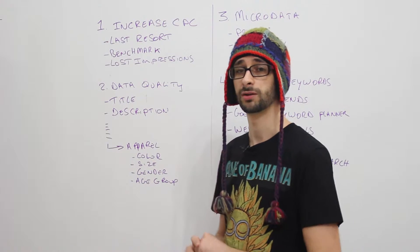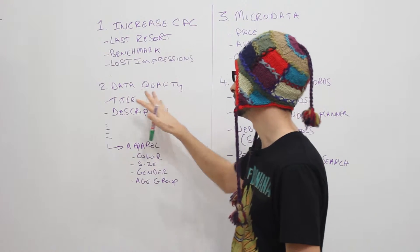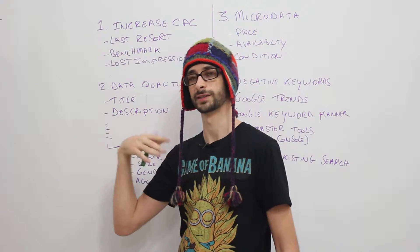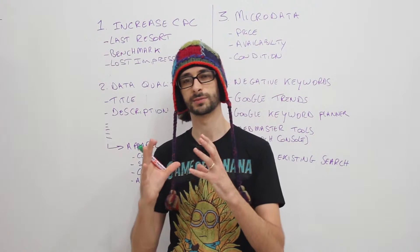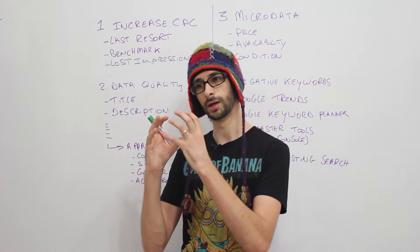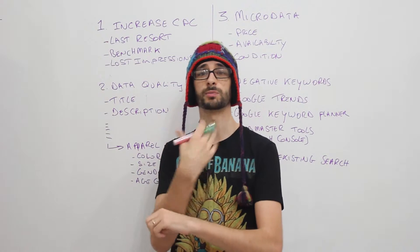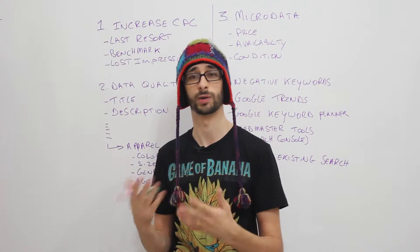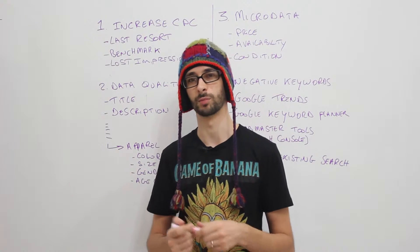Now that we've added the microdata, it's very important that we also update the data quality of our data feed. So the title and the descriptions are the two items that Google extracts the keywords to display your product. So if you have highly relevant search terms, then your product will be ranked much better.